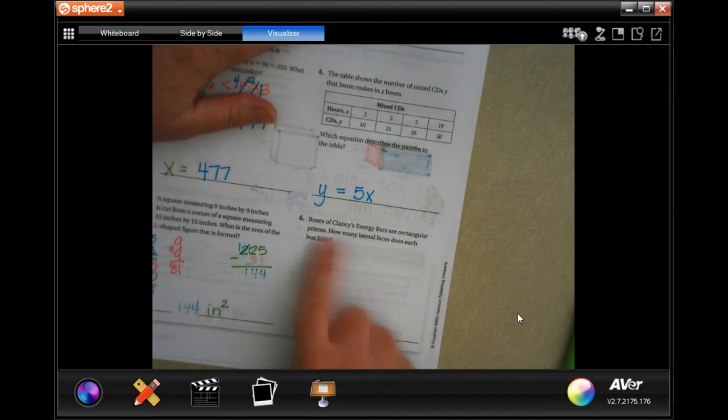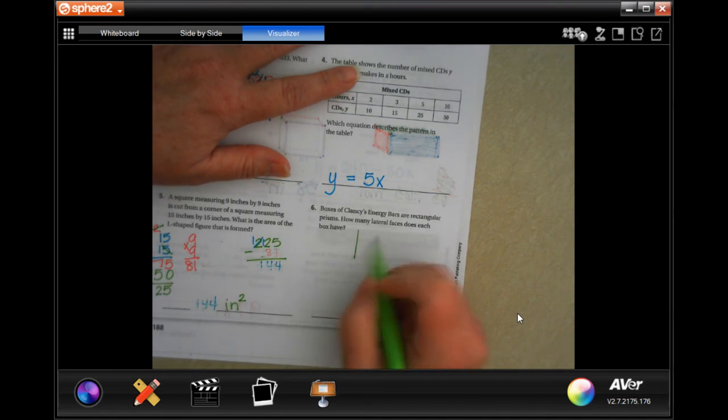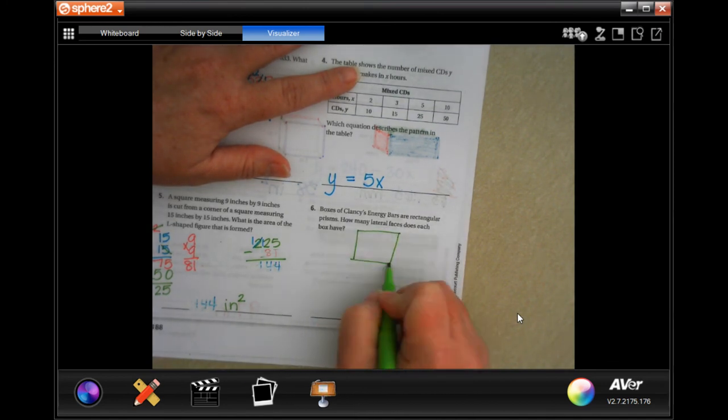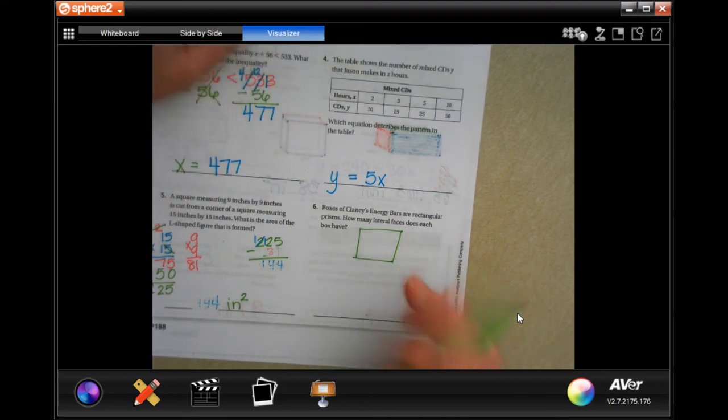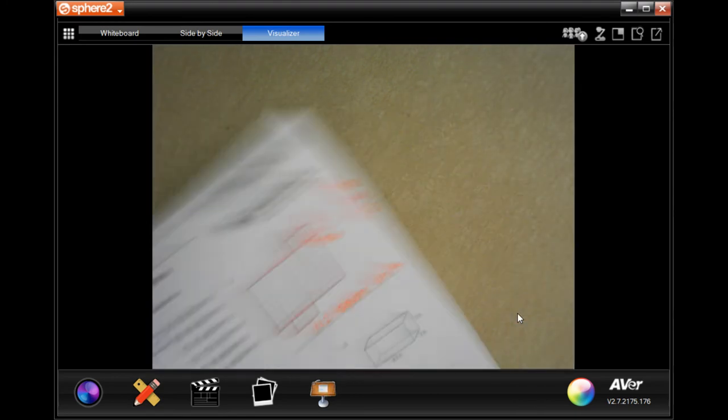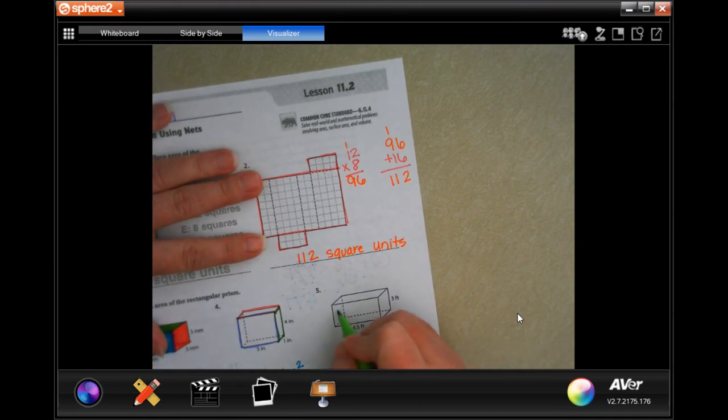Boxes of Quincy's energy bars are rectangular prisms. How many lateral faces does each box have? Well, so, we're going to have a box. Well, here. Let's do it this way. We're going to go back just for a second to number 5. And I'm just going to show you the picture. So, there's 1 side, 2 sides, 3 sides, 4 sides, 5 sides. Oh, and then 6 sides is the one that's facing us. So, it has 6 sides.